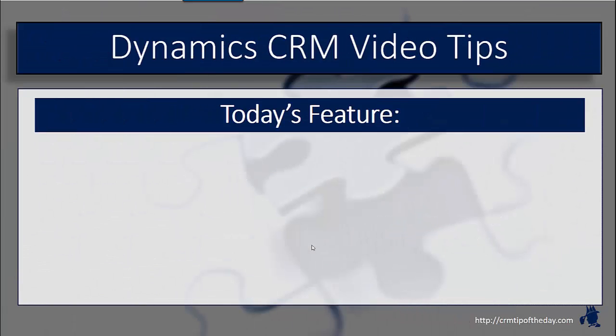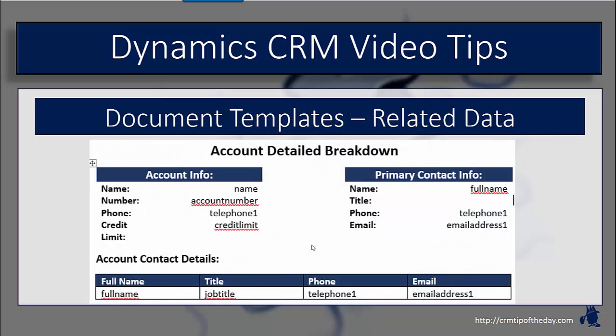In today's video we're going to expand on a previous topic and talk a little bit more about document templates and specifically related data. As my fellow partner Joel pointed out, how many times are you going to create a document template that just has account or contact information? More often you might want an order summary with line items, an account summary with primary contact, all contacts, opportunities, and cases, or field service work orders.